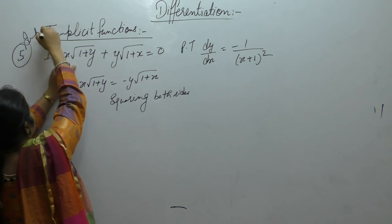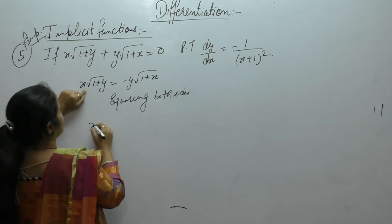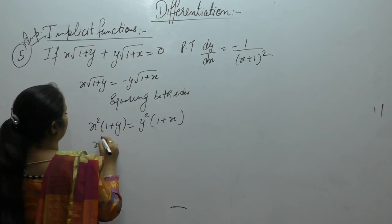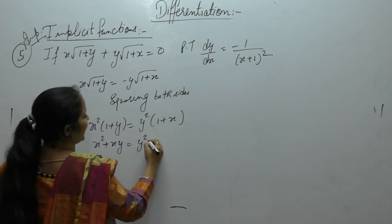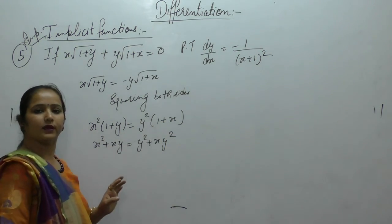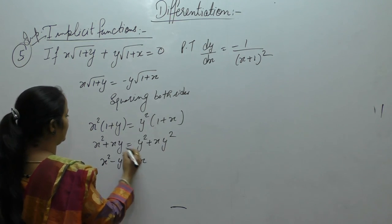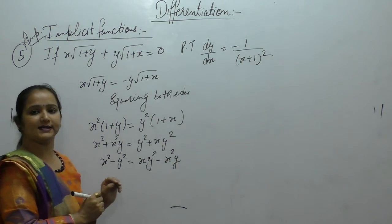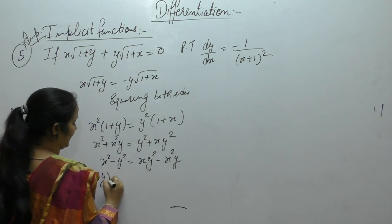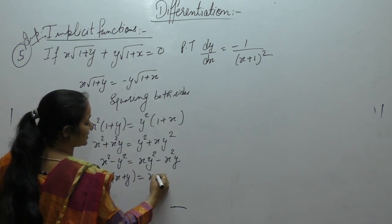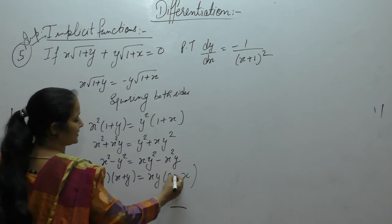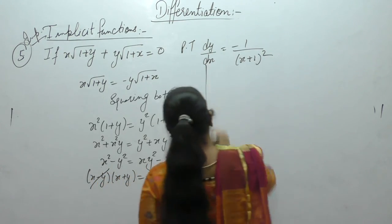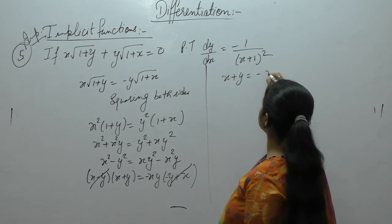Squaring: x²(1+y) = y²(1+x), giving x² + x²y = y² + xy². So x² − y² = xy² − x²y. Left side: apply a²−b² = (a−b)(a+b). Right side: take xy common, giving xy(y − x) = −xy(x − y). Dividing both sides by (x − y), it cancels, leaving x + y = −xy.